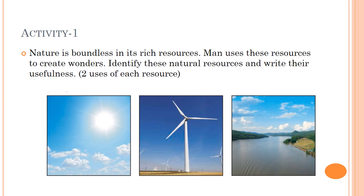Nature is boundless in its resources — boundless means which has no end or limit. Man needs these resources to survive and create wonders. In this activity you have been given pictures of three natural resources which you have to identify and write their usefulness. The first one is Sun. The Sun gives us heat and light; it gives energy to the growing green plants that provide food and oxygen for life on earth. The second picture is of a windmill.